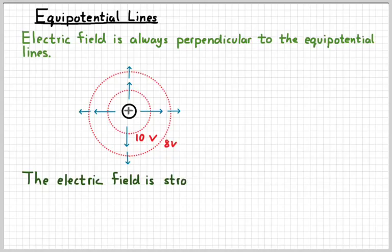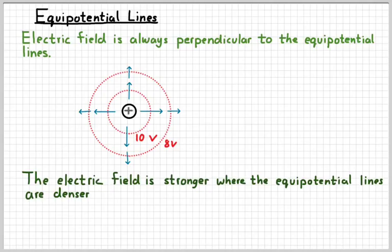Also, you might note that the electric field is bigger closer to the charge, where the equipotential lines are denser. And so when the equipotential lines are denser, the electric field is going to be stronger.